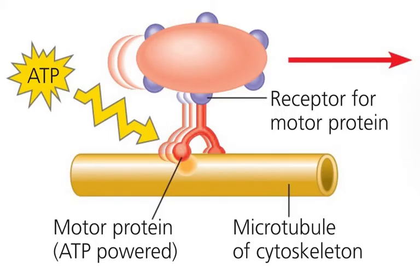Motor proteins interact with the cytoskeleton to help things move, and when we do this, we have to use up energy in the form of ATP.